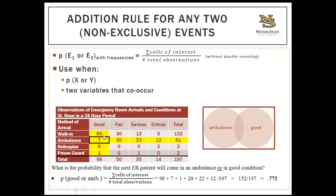Using the joint frequency distribution table: add all good condition cells (90 + 7 + 0 + 1) and all ambulance cells (20 + 22 + 12 + 61) without double counting the intersection (good condition and ambulance = 7), giving 152 total cells of interest. Divide 152 by 197 total patients and you get 0.772.